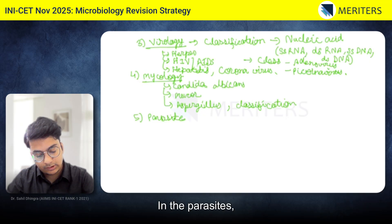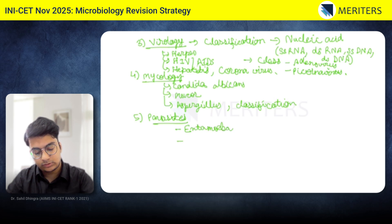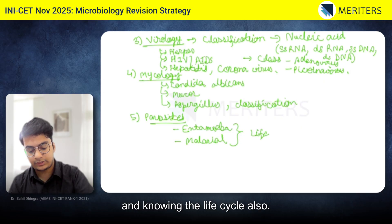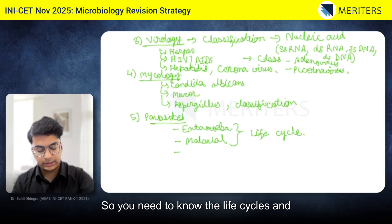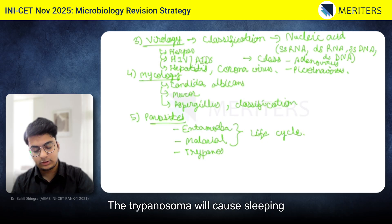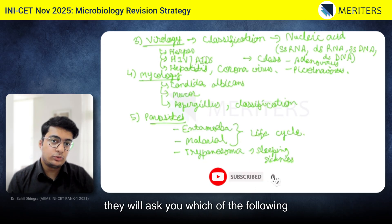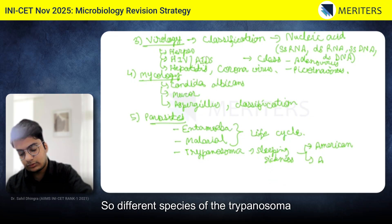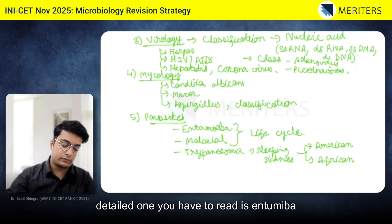In parasitology, only three things are important. First is Entamoeba histolytica. Then the malarial parasite. For these two, you should read in detail including the life cycle — they will ask about stages like trophozoite and sporozoite. There is also Trypanosoma, which causes sleeping sickness. They will mostly ask which organism causes American sleeping sickness versus African sleeping sickness, as different species of Trypanosoma cause each. For Trypanosoma, you only need to know the names of those two species; read in detail only for Entamoeba and malaria.